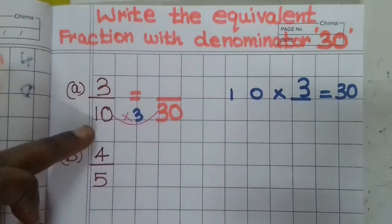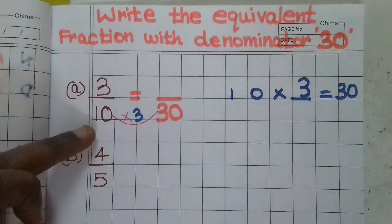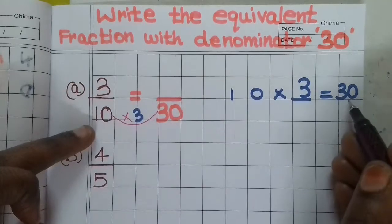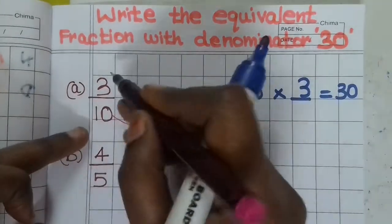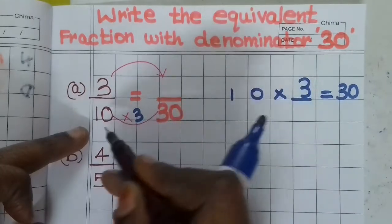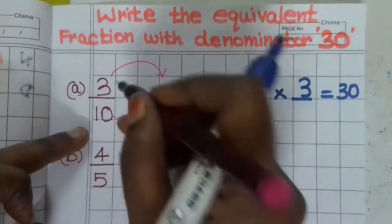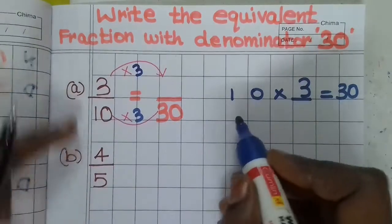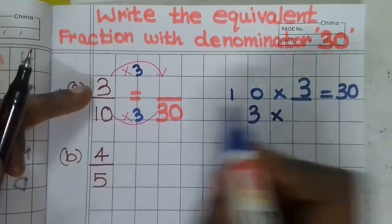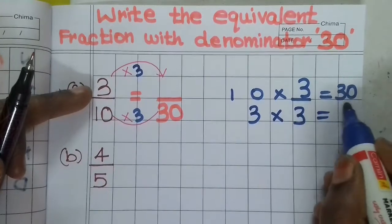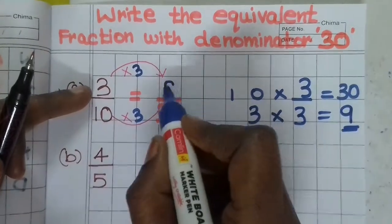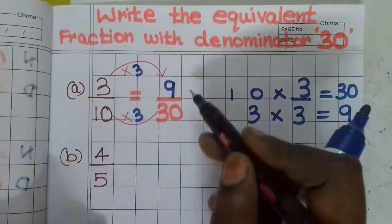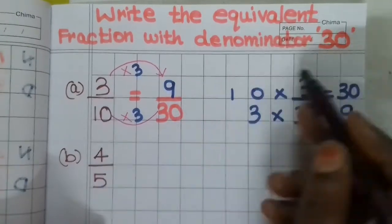We will multiply to increase the numbers and divide to reduce. We make it 6 times — 10 equals 30. So for the denominator, we put out the denominator. 3 times 3 is equal to 9. So the answer is 9. Write the equivalent fraction with denominator 30: 3 by 10, the answer is equal to 9 by 30. So the denominator is 30.